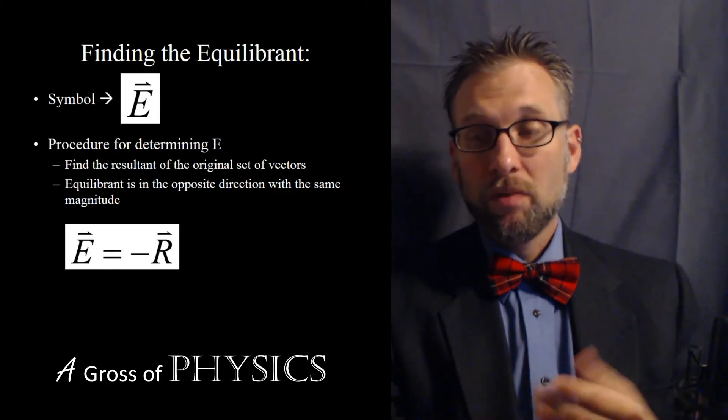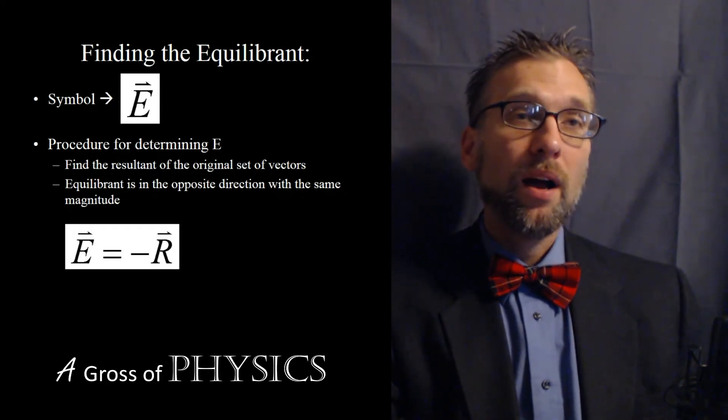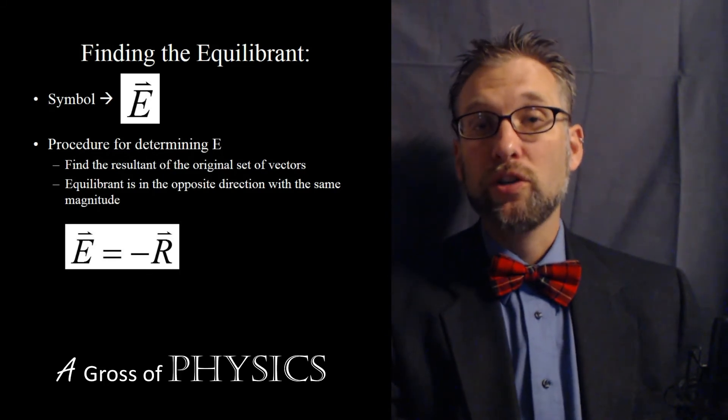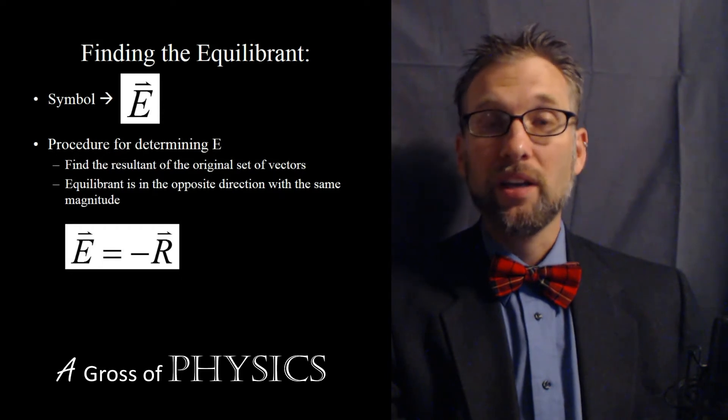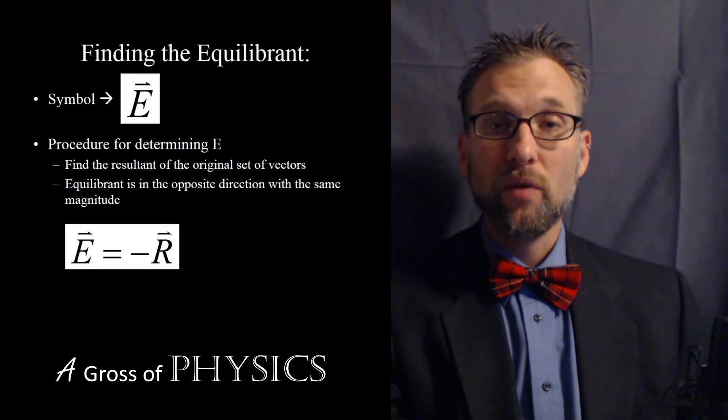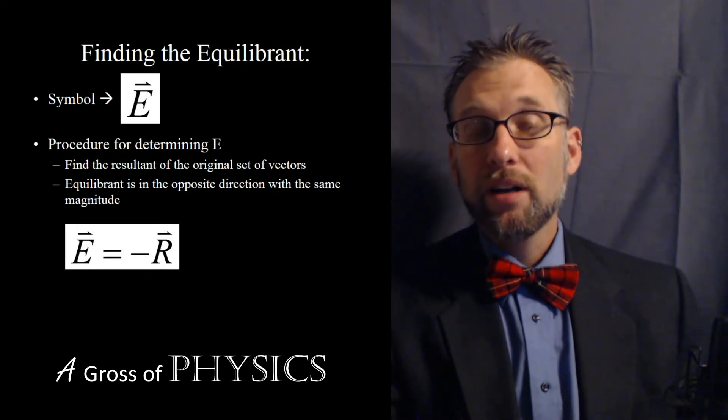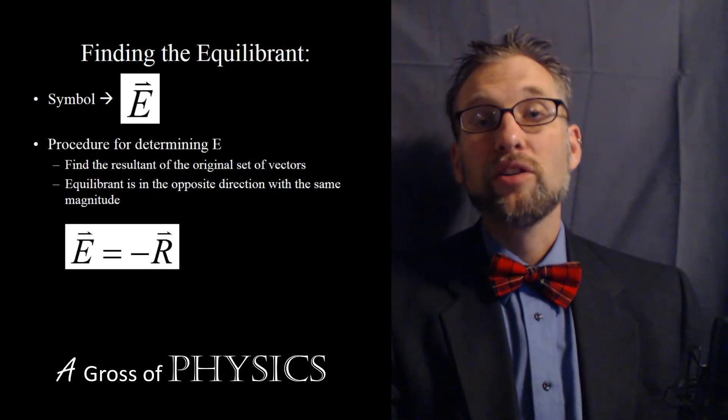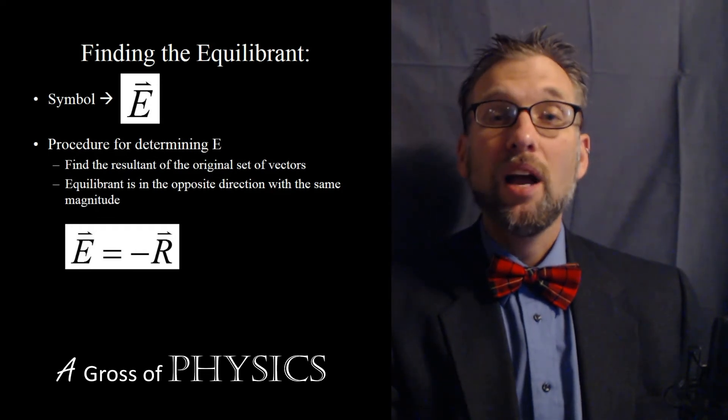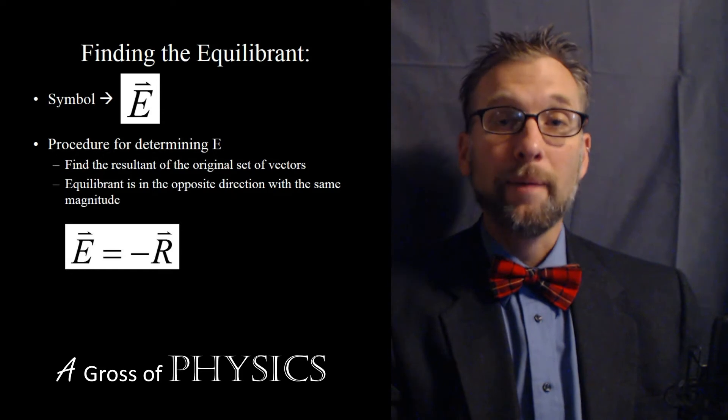So if R is 100 meters per second at 30 degrees north of east, we would switch the north to south. So it would be south of, and switch the east to west, south of west. It's the same number. It's the same unit. It's just the opposite direction. Now in the x and y coordinate system, it would be 180 degrees away.